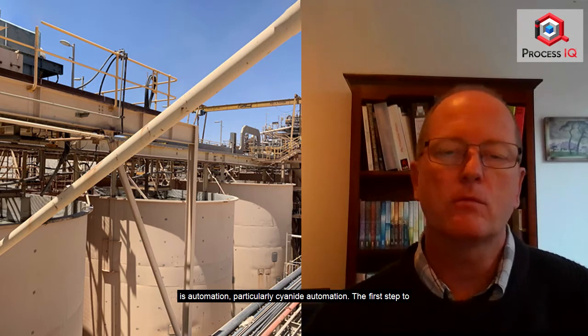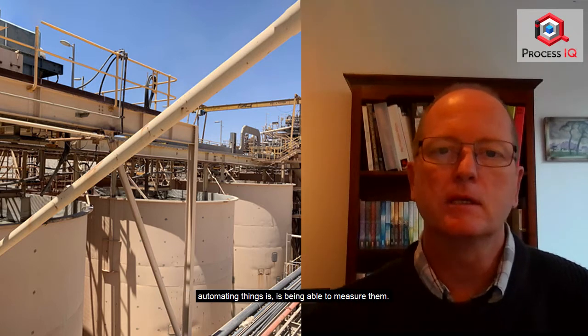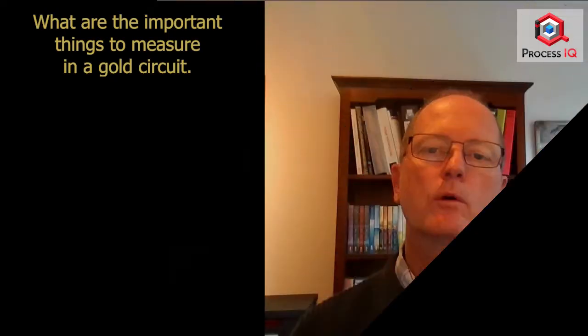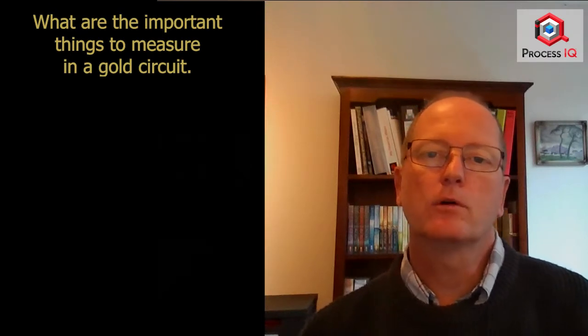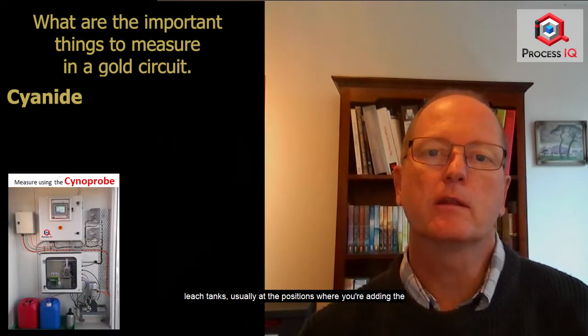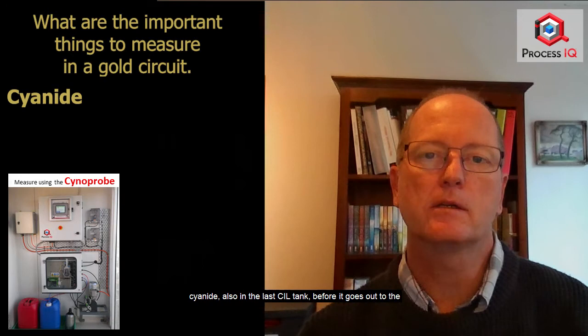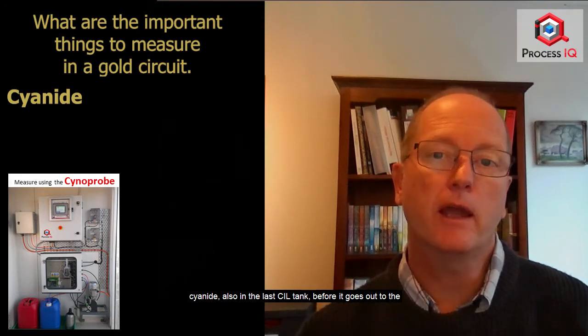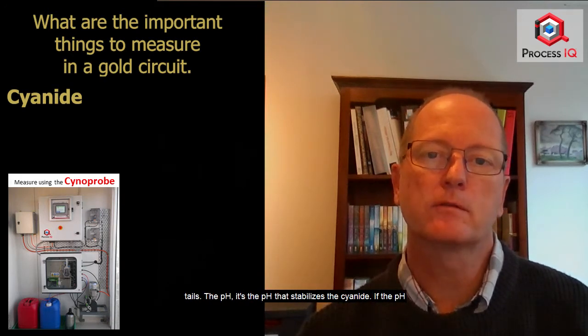The first step to automating things is being able to measure them. So what are the important things to measure in the gold circuit? We mentioned the cyanide. It's really important to measure the cyanide in the leach tanks, usually at the positions where you're adding the cyanide, and also in the last CIL tank before it goes out to tails.